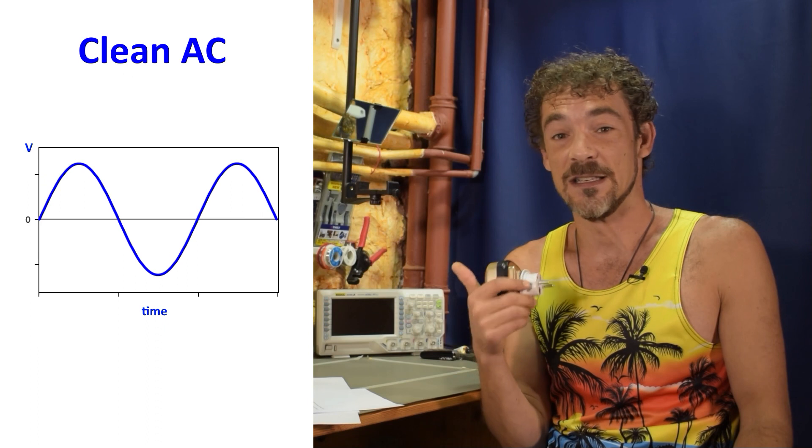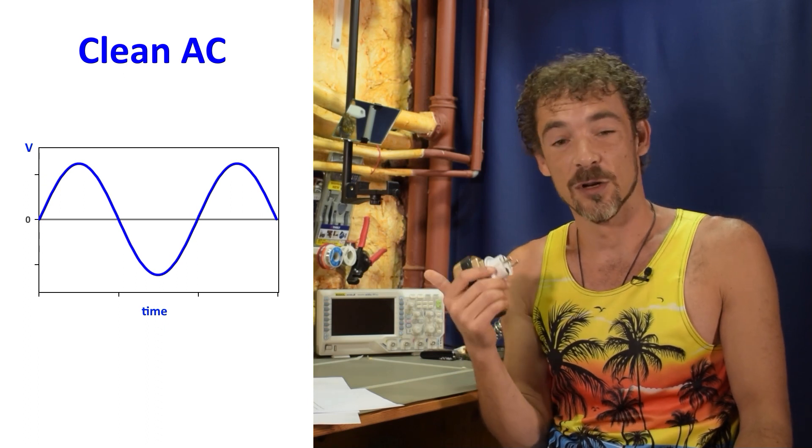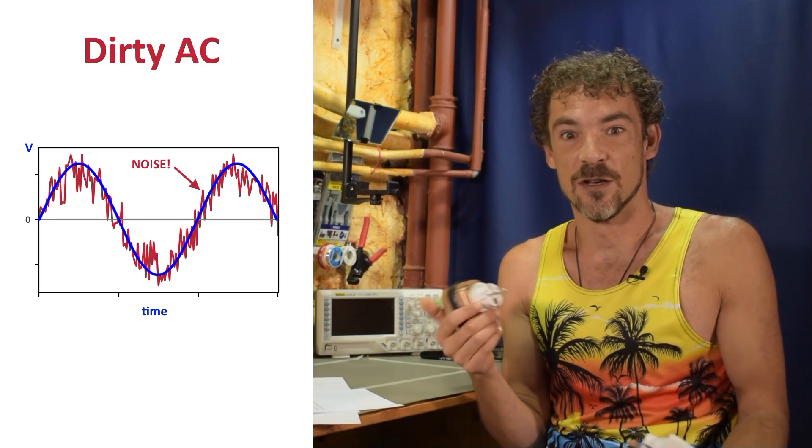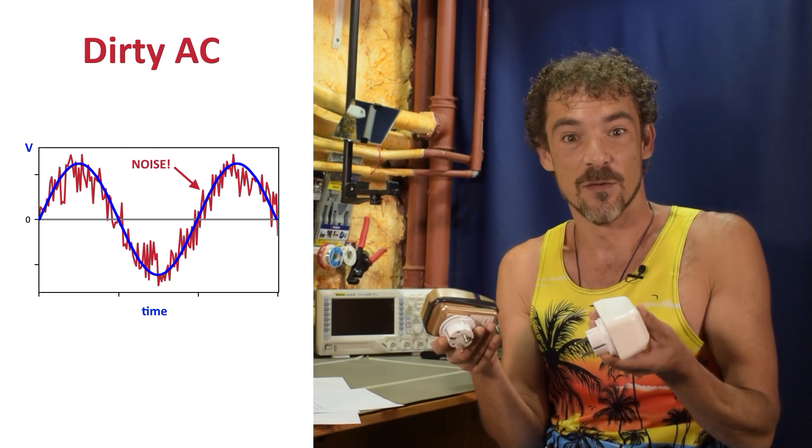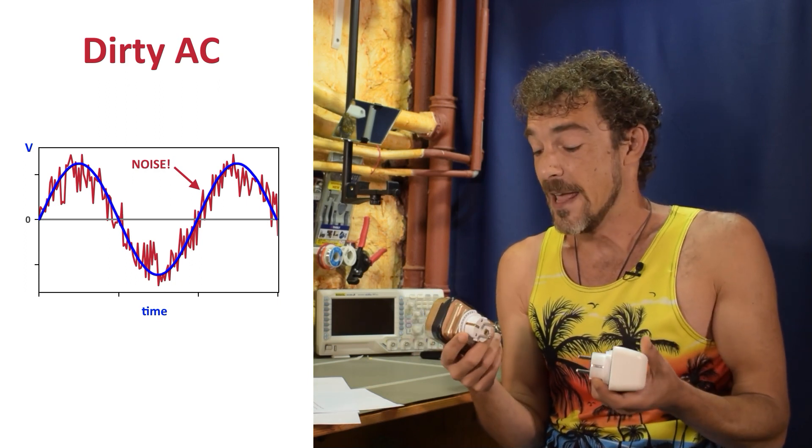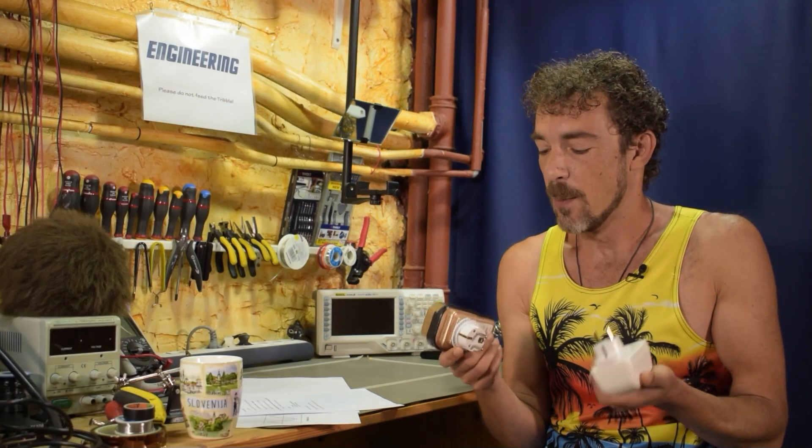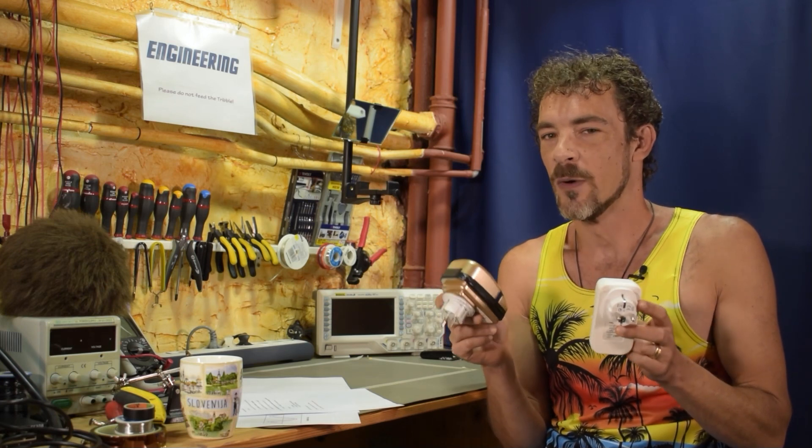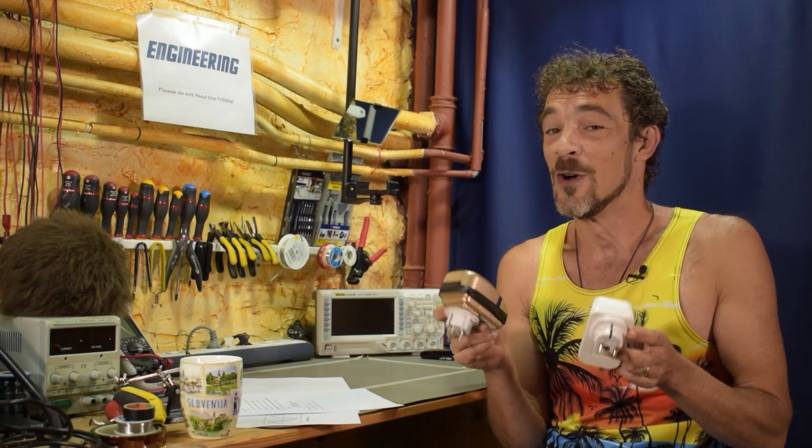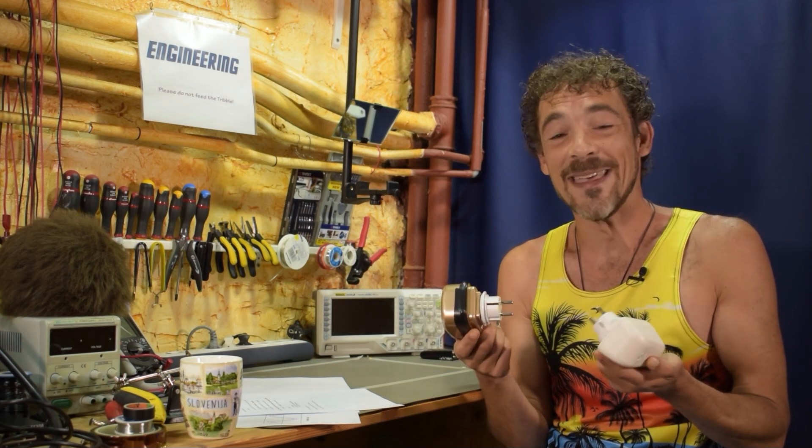They do reduce the electrical noise. Normally you have an AC sine wave—clean power looks like this. And with dirty electricity, there's noise on it. These filters get rid of the noise. Now there's one little problem with them that you probably are unaware of, and that is that you should not use dirty electricity filters if you have a backup generator. When you are running on generator power, you need to unplug them. So why is that?